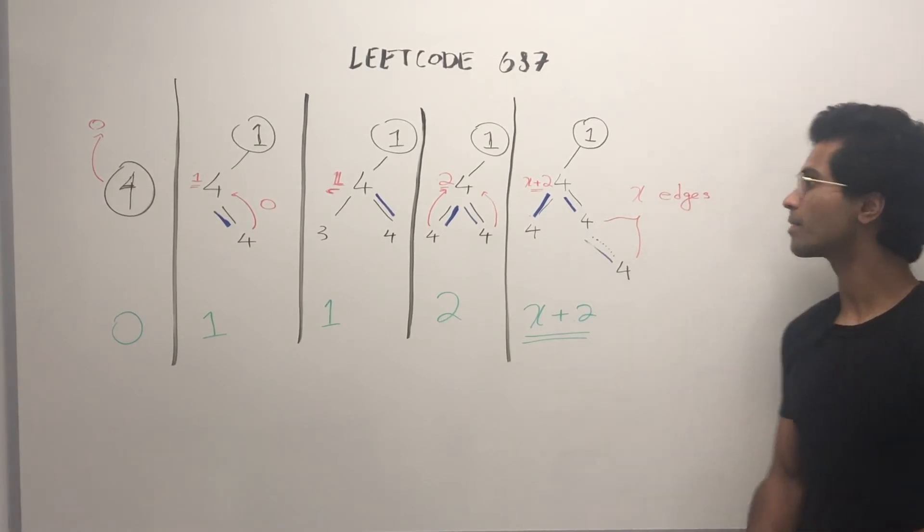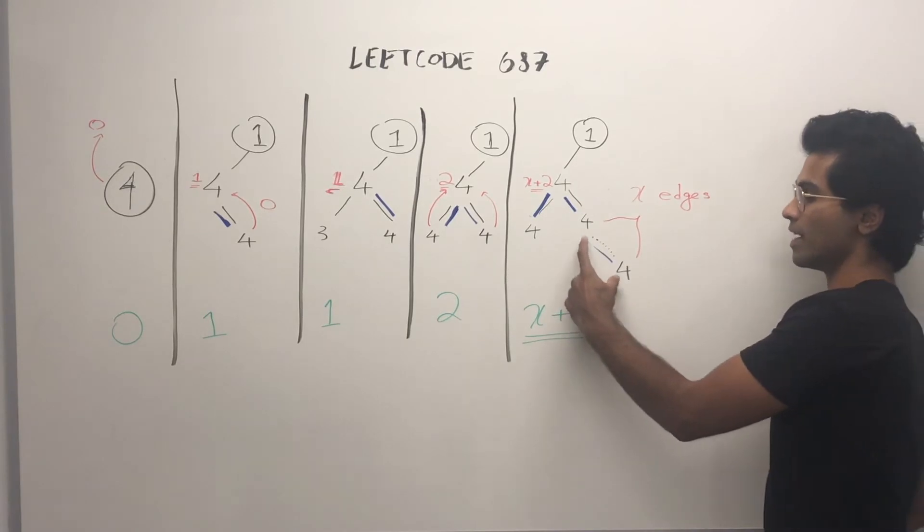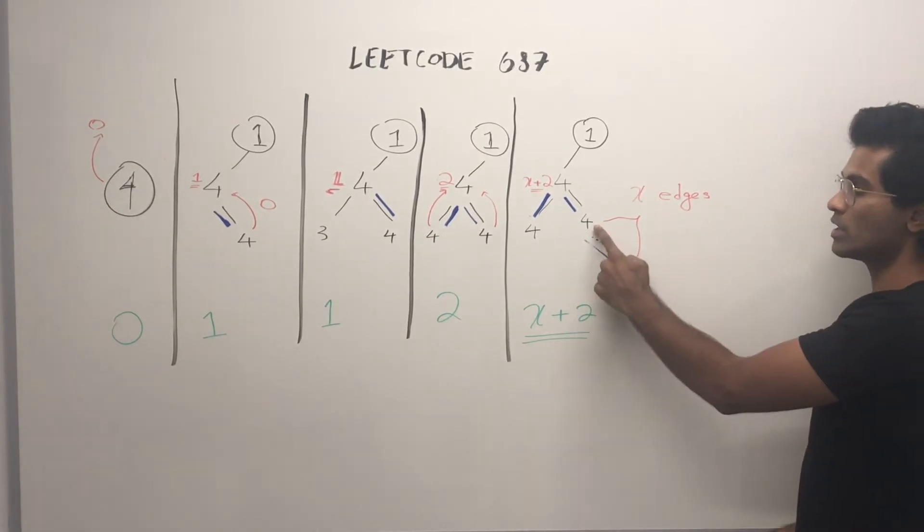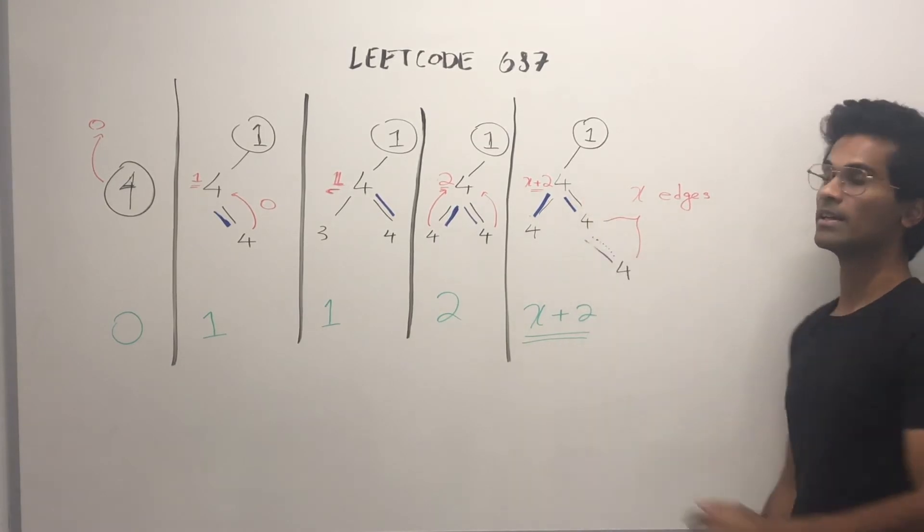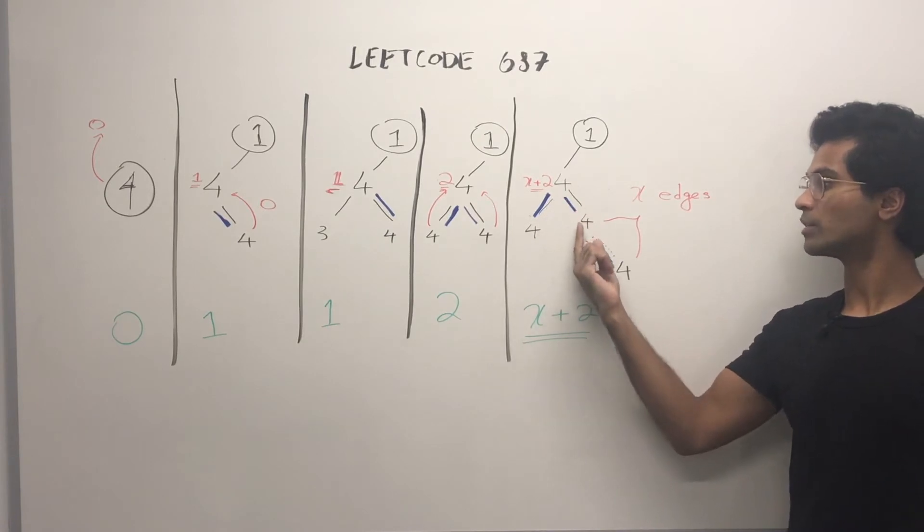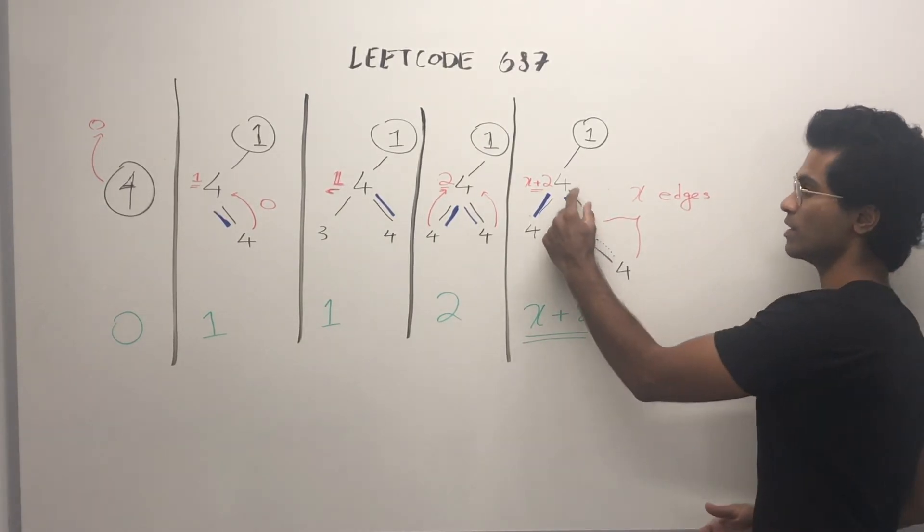Let's look at the last case. Here's a root node. Here's a 4. And let's assume that from here to here there are x edges. So this 4 is going to tell its parent that there are x edges going through me. This 4 is going to see that its right child is the same. So it's going to say x plus 1 because of this edge.